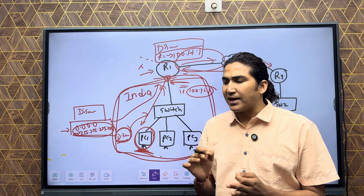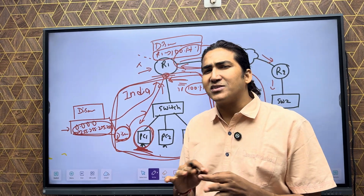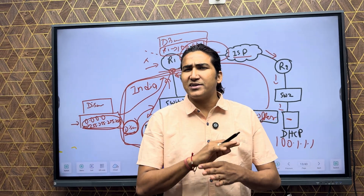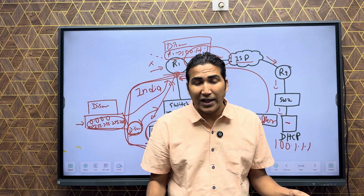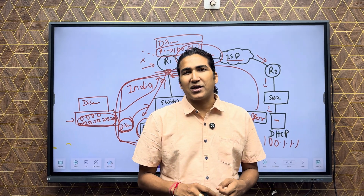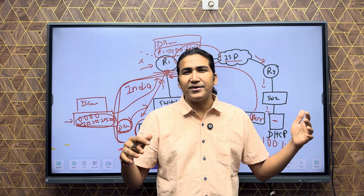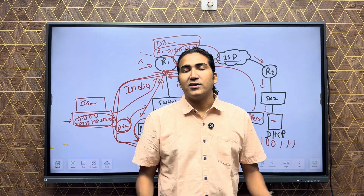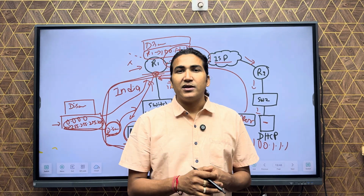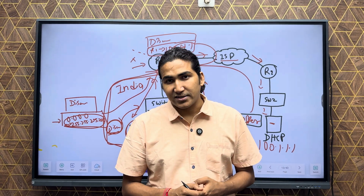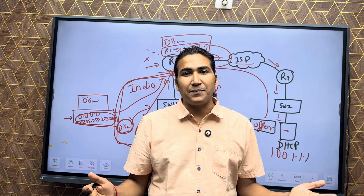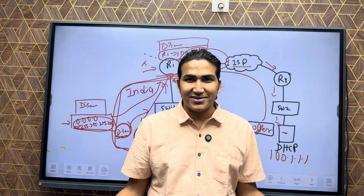When the DHCP server and client are both in the same subnet, a DHCP relay agent is not required. But when the DHCP client and server are in different subnets, there must be a relay agent — only then can the client machine get an IP address.